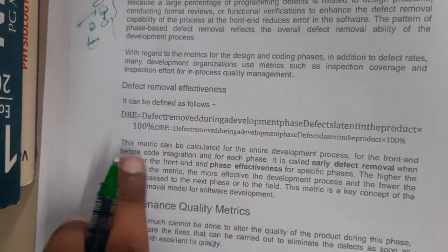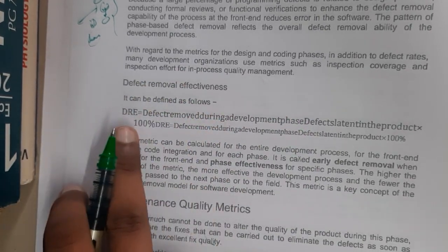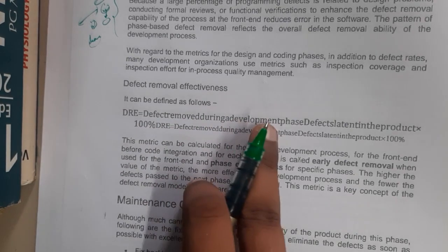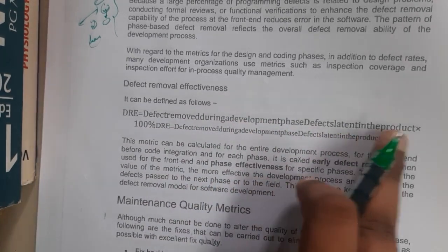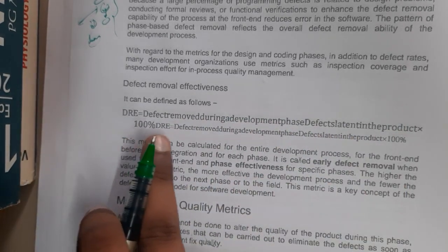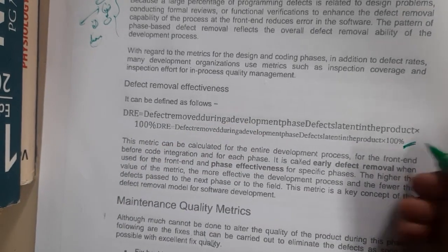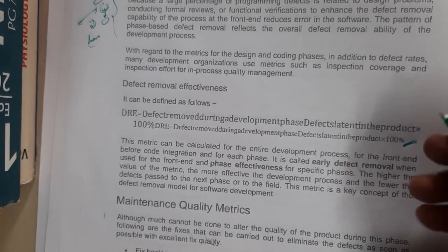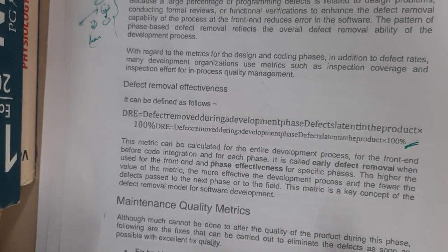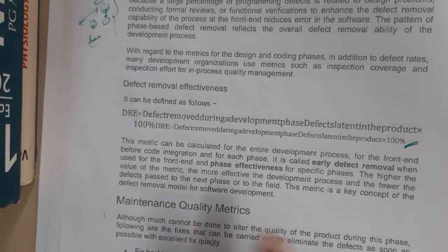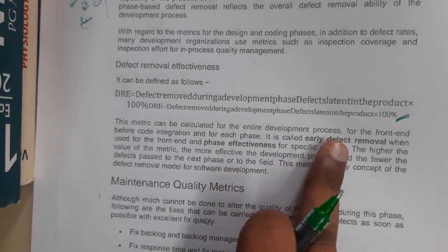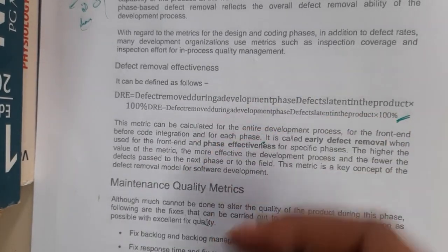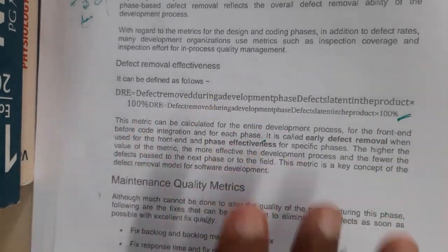The last type is defect removal efficiency. This is a calculation formula. The formula is: DRE = (defects removed during development phase / defects latent in the product) × 100%. This matrix can be calculated for the entire development procedure — before coding, during integration, and for each individual phase, or all phases combined as a single phase.